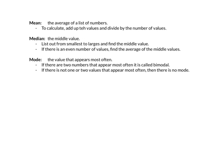The last one we're going to look at is mode. Mode is the value that appears most often. We have three possibilities: if you have one number that appears most often, it is the mode. If you have two numbers that appear most often, we keep both of them and it is called bimodal. If there is not one or two values that appear most often, then there is no mode. There's no such thing as trimodal or quadrimodal — it's either a mode, bimodal, or no mode.